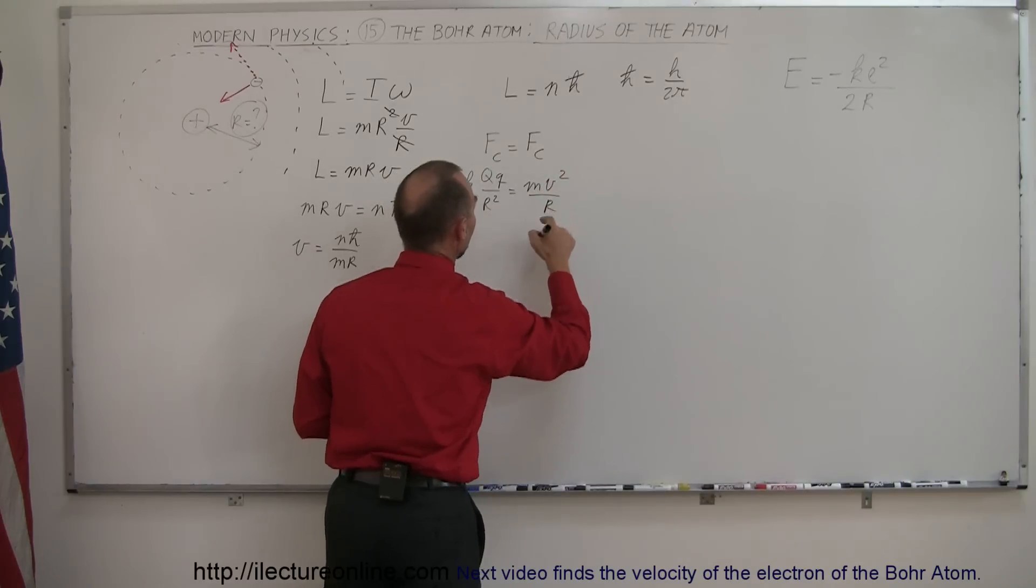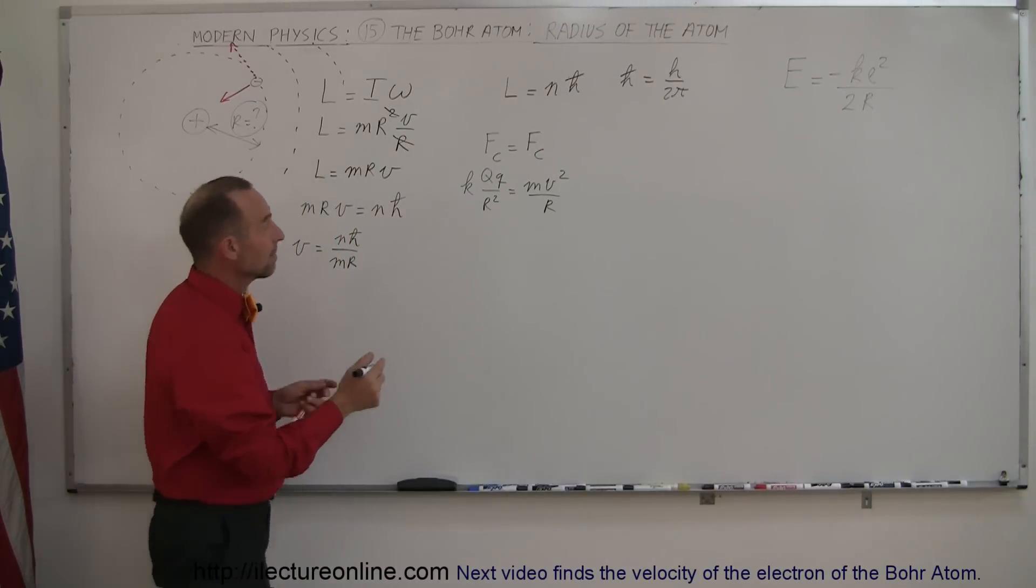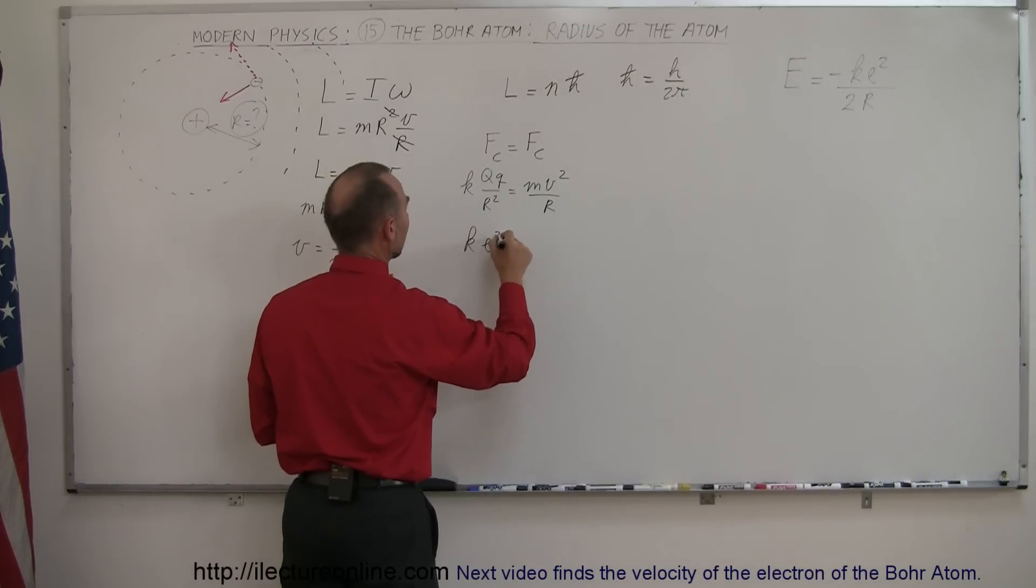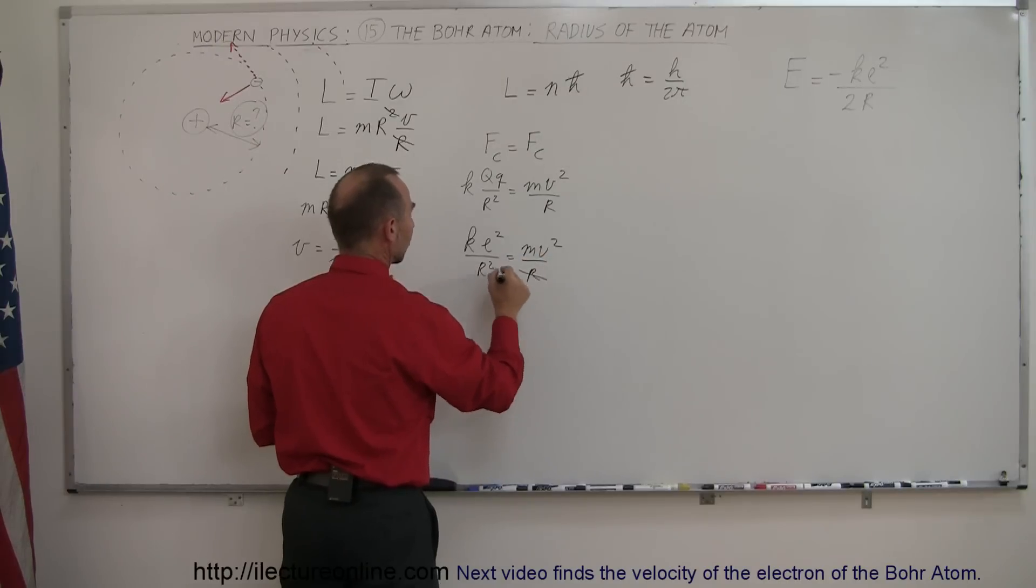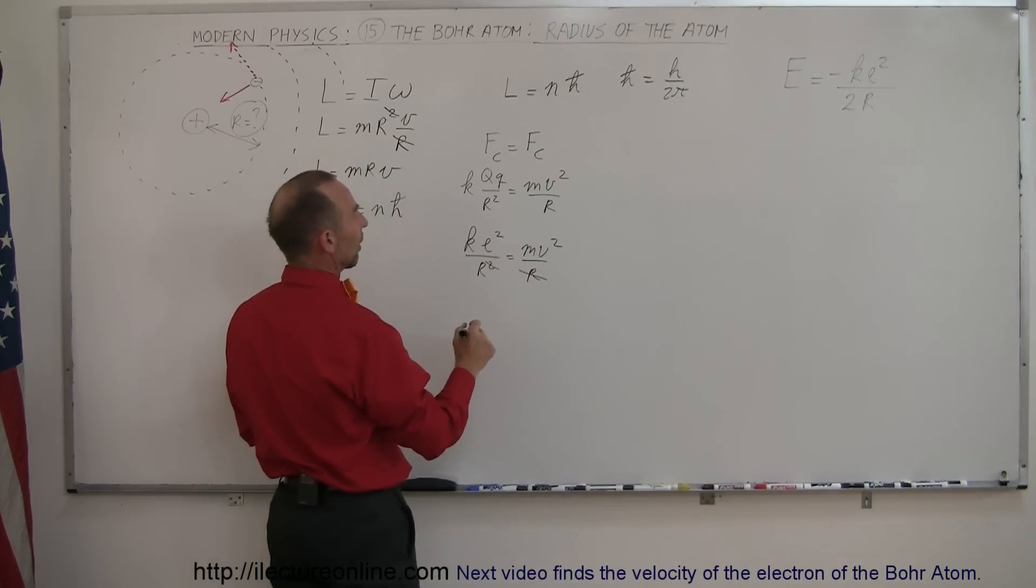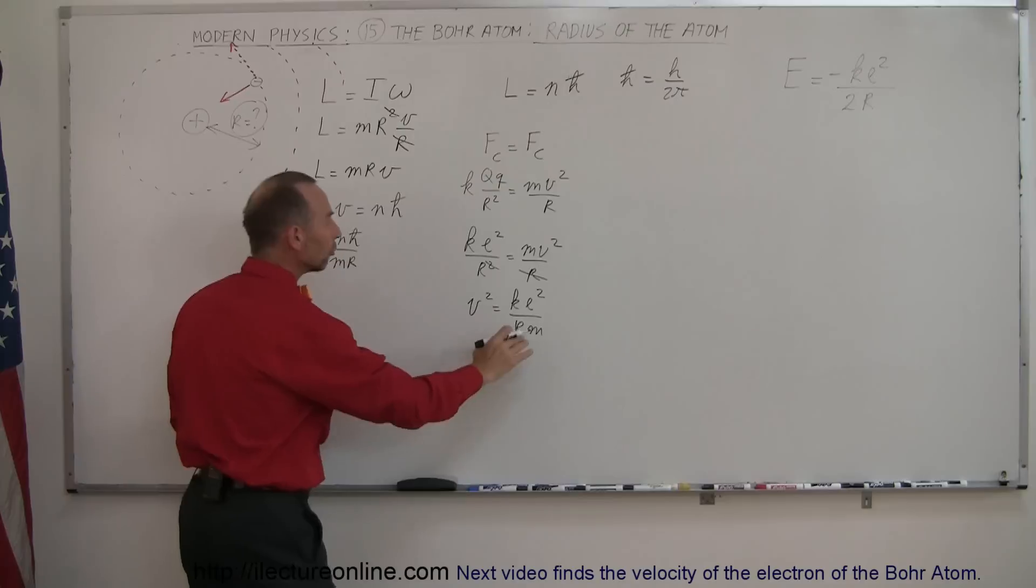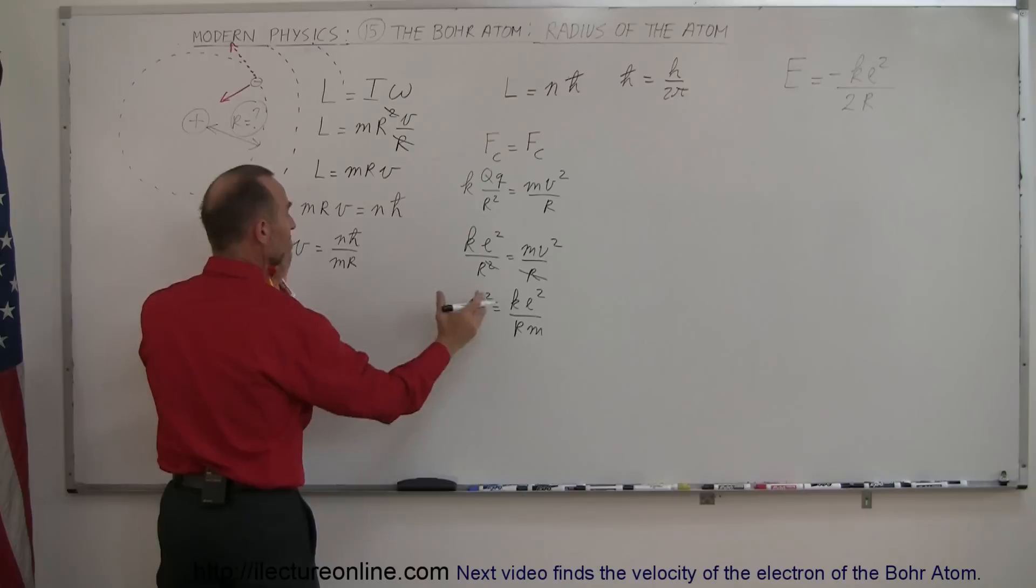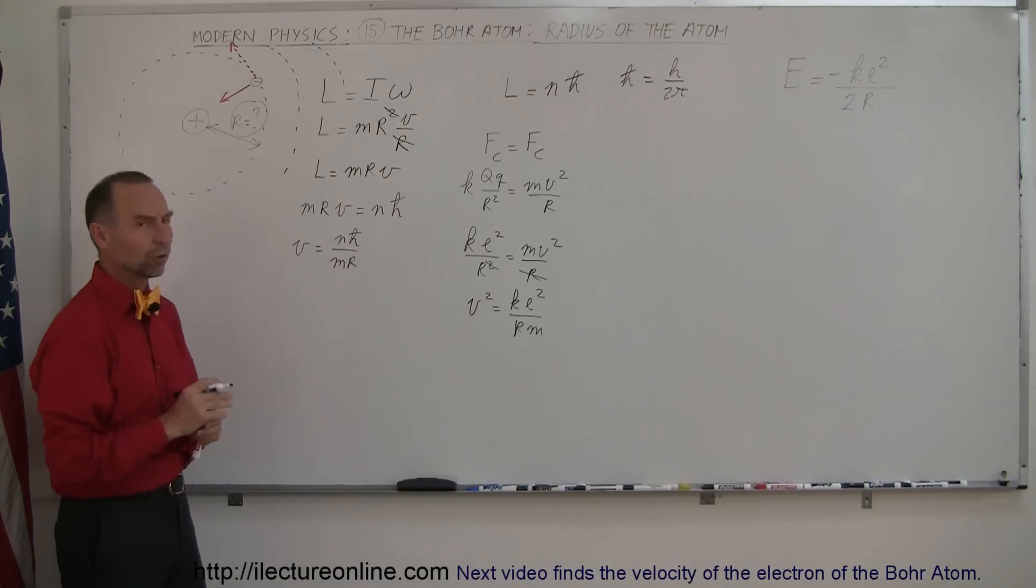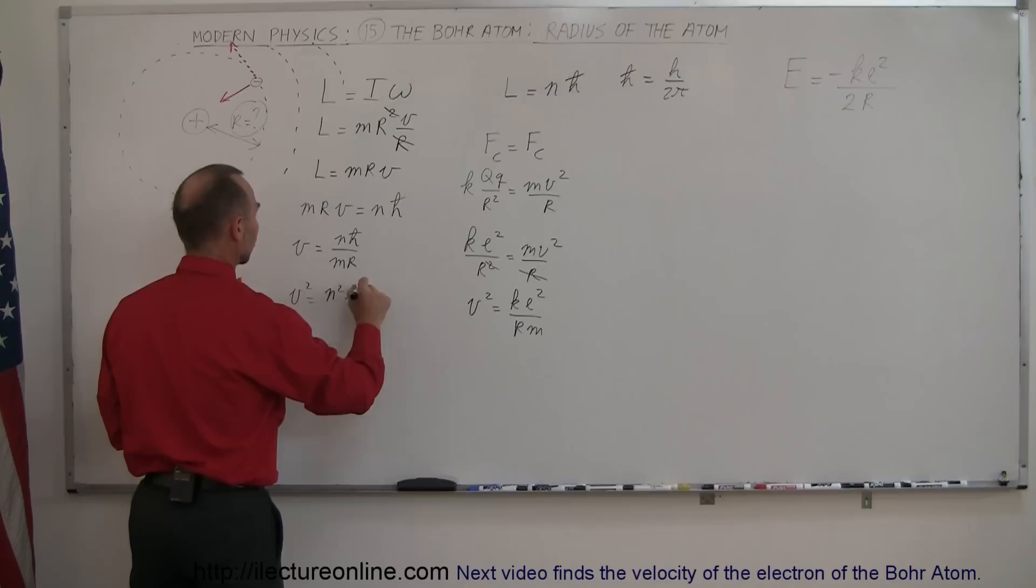The Coulomb force is kqq/r² and that equals the centripetal force mv²/r. The charges here are the proton charge and electron charge - we can just call it e. This becomes ke²/r² = mv²/r. Canceling this r with that r and solving for v², we get v² = ke²/(rm).